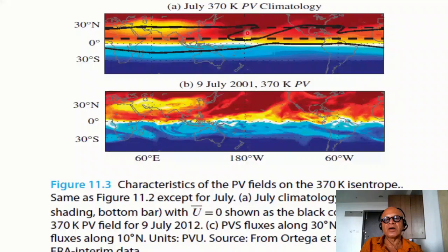So if you look at the July 370K PV climatology here you can see the tropical upper tropospheric trough. So this is looking specifically at characteristics of the PV fields on 370K isentropes. It's same as the previous figure except for July. July climatology with U bar equal to 0 so the background zonal wind field is stationary. So these are produced from a model that Webster has been working with for a long time. The 370K PV field for 9th July 2012 in B and I'm not showing C here.